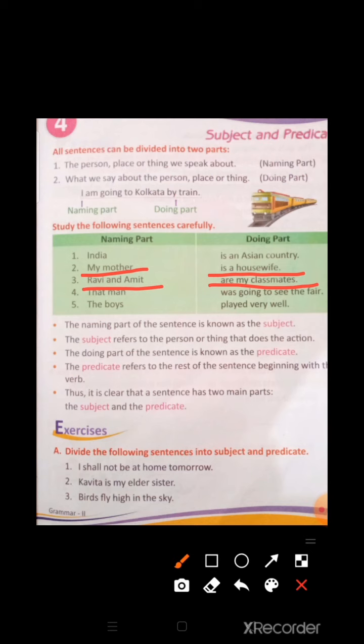'That man was going to see the fair.' — 'That man' is the naming part, meaning Subject. 'Was going to see the fair' is the doing part, also called Predicate. 'The boys played very well.' — 'The boys' is the naming part; 'played very well' is the doing part.